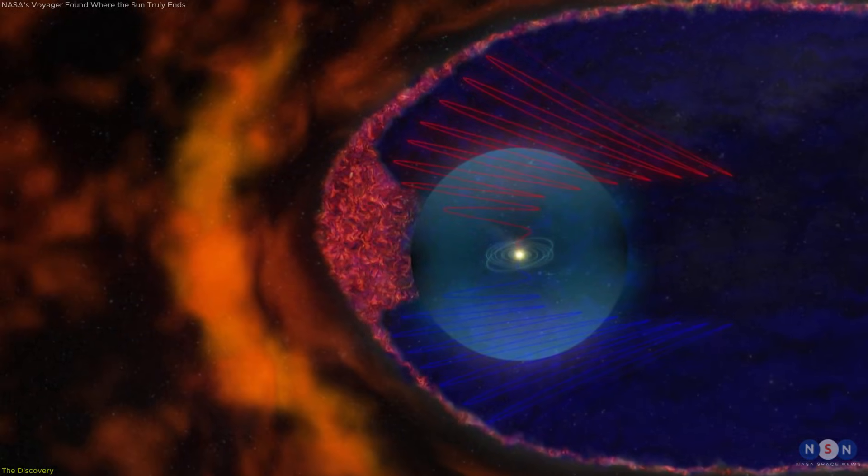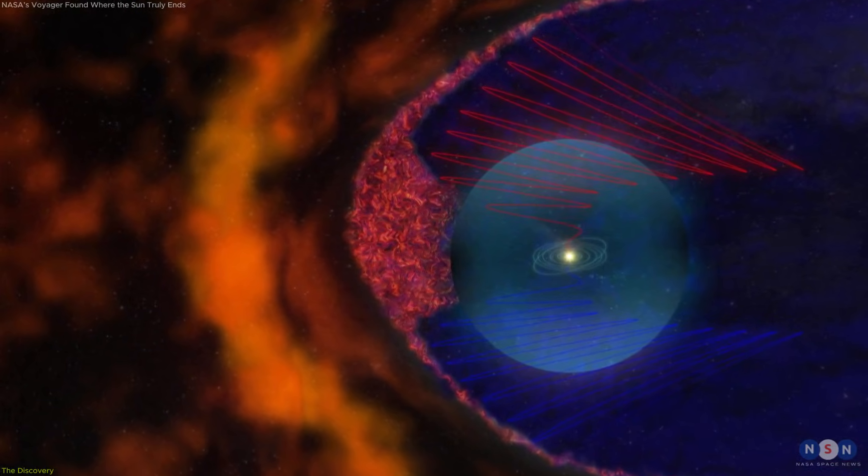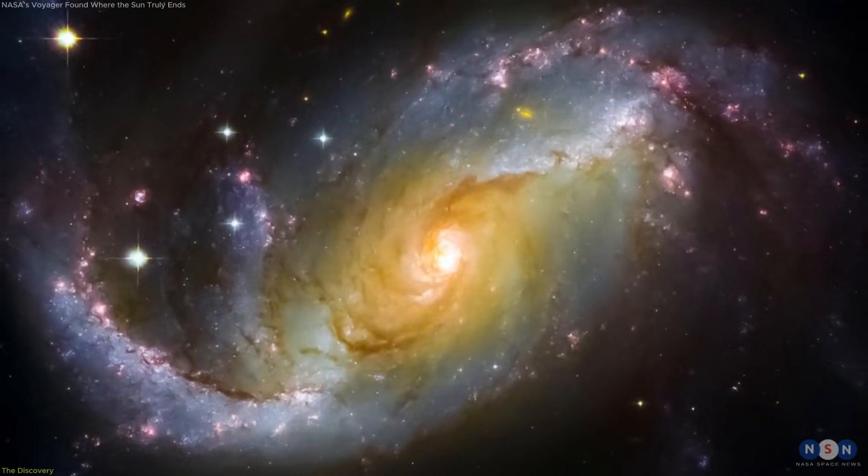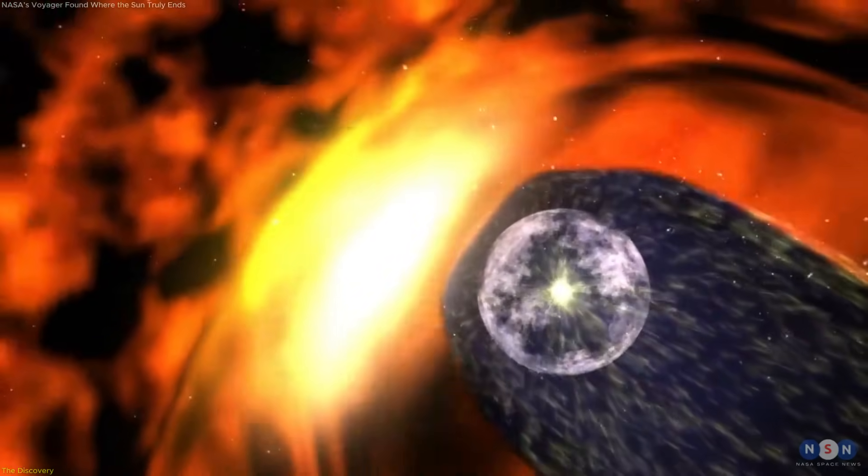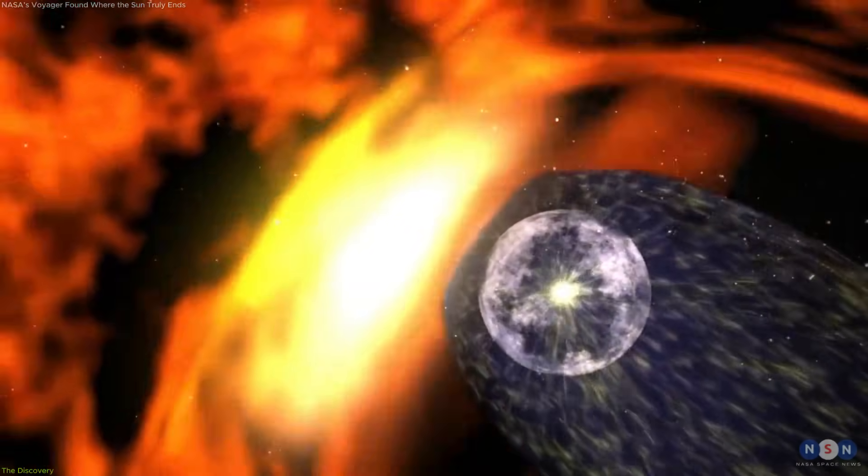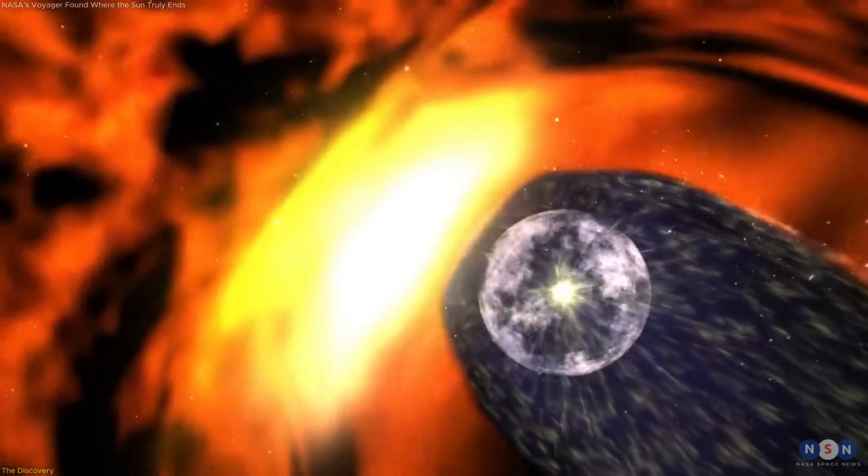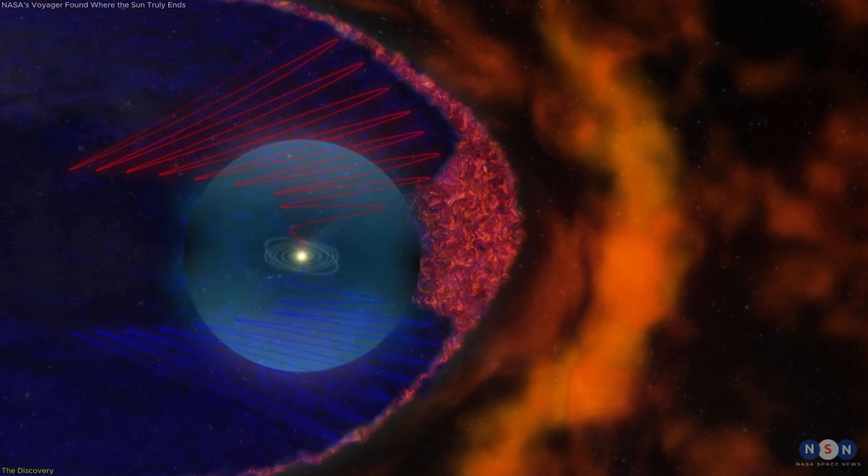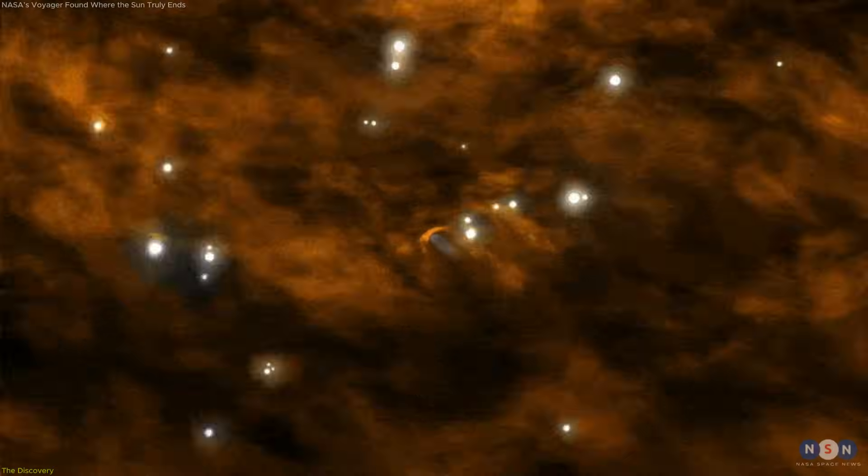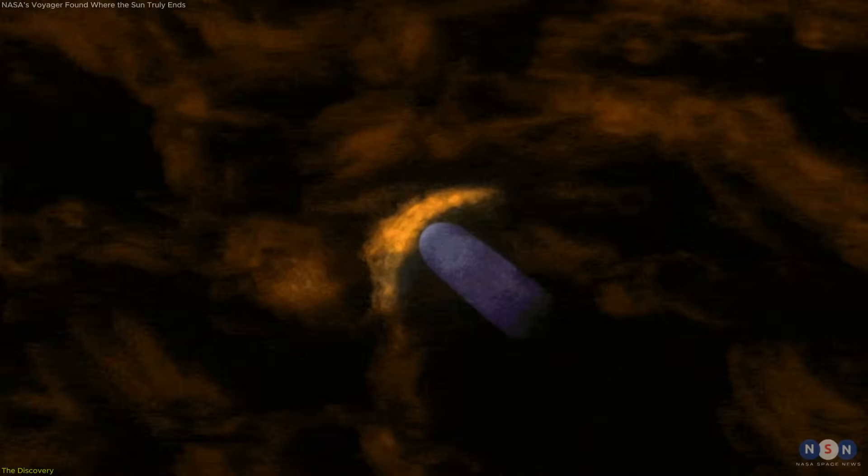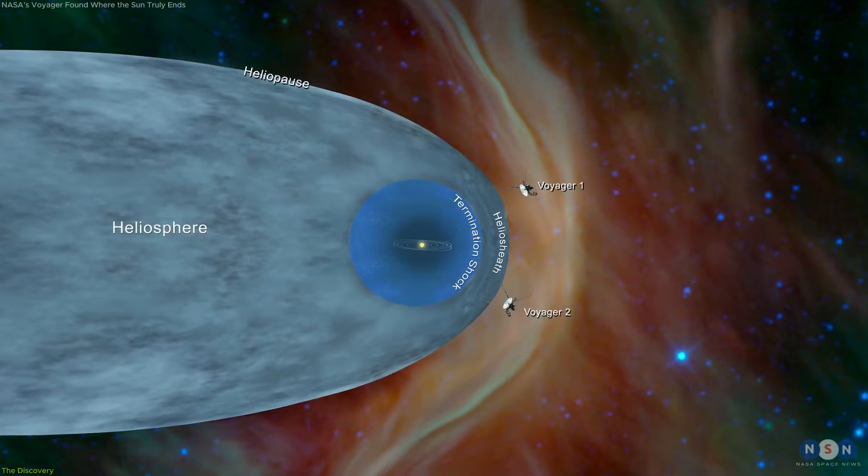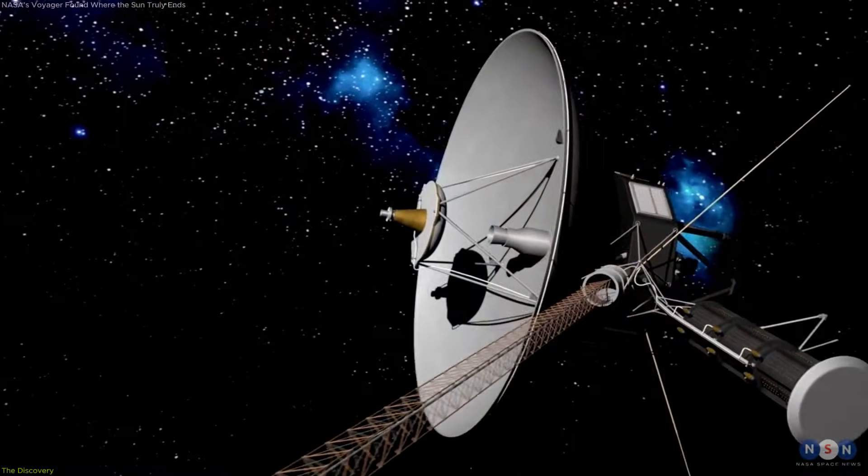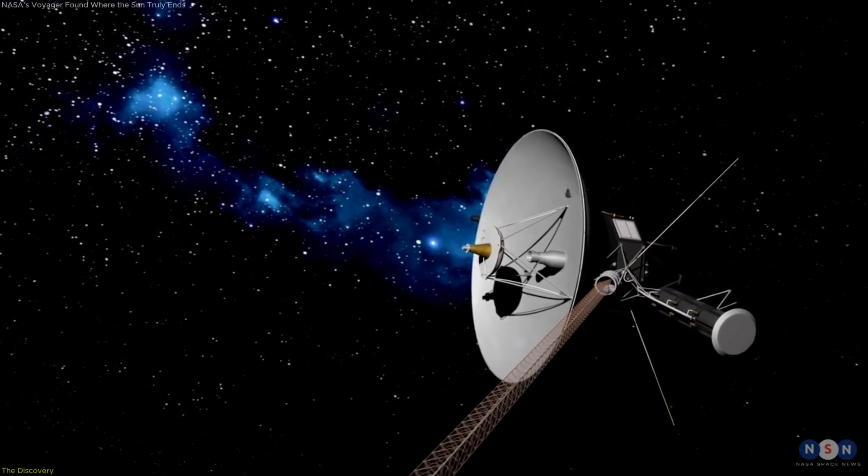On one side, the plasma environment was controlled by the Sun. On the other, it was shaped by the magnetic fields and particles of the Milky Way. Near this boundary, Voyager also detected a region where solar particles were compressed and heated as they slowed down. This created a layer of high-energy plasma just inside the heliopause. Temperatures and particle densities in this region were much higher than models had predicted, indicating that the interaction between the solar wind and interstellar space is far more energetic than previously assumed.